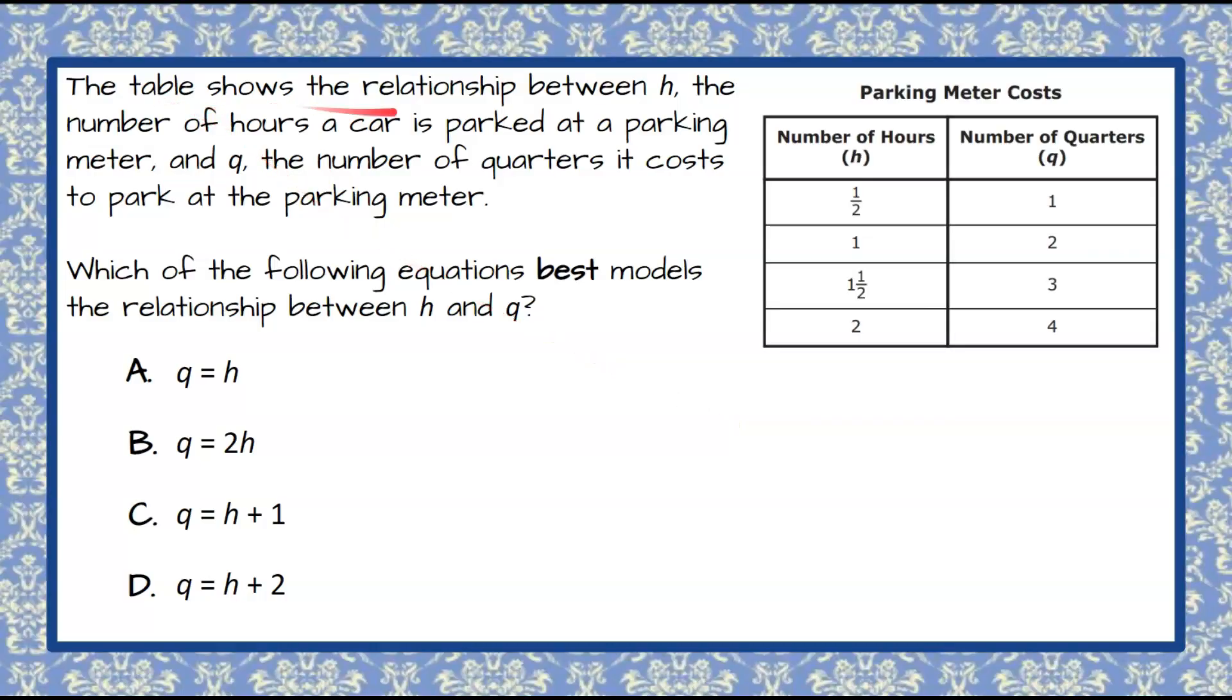The table shows the relationship between H, the number of hours a car is parked at a parking meter, and Q, the number of quarters it costs to park at the parking meter. Which of the following equations best models the relationship between H and Q? So you're given this table of values for H and Q, and you're given four equations in these four answer choices.